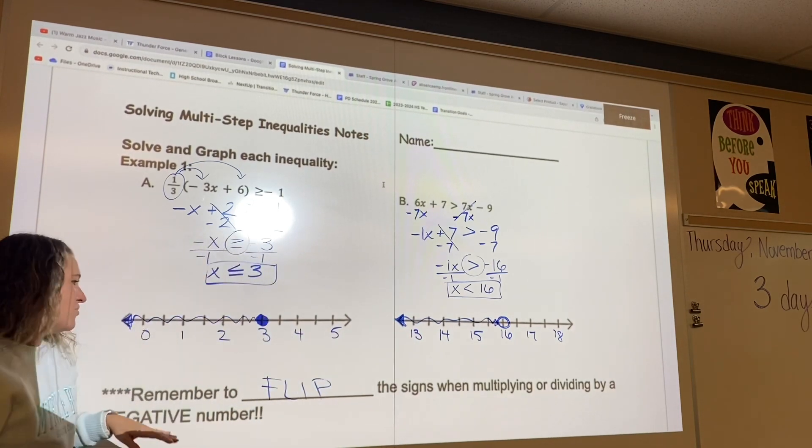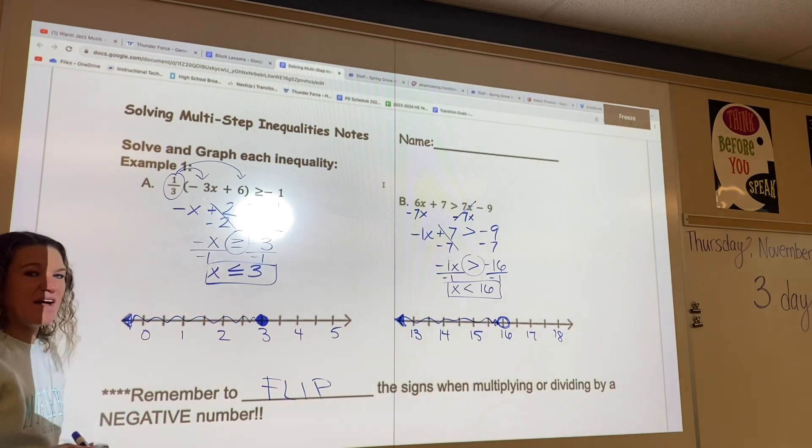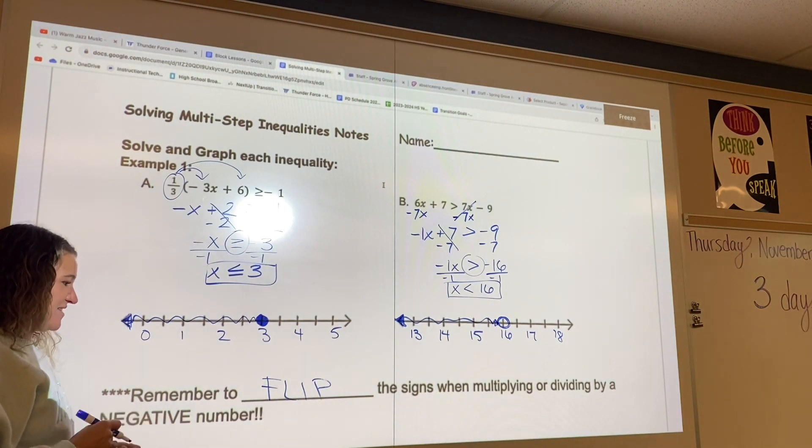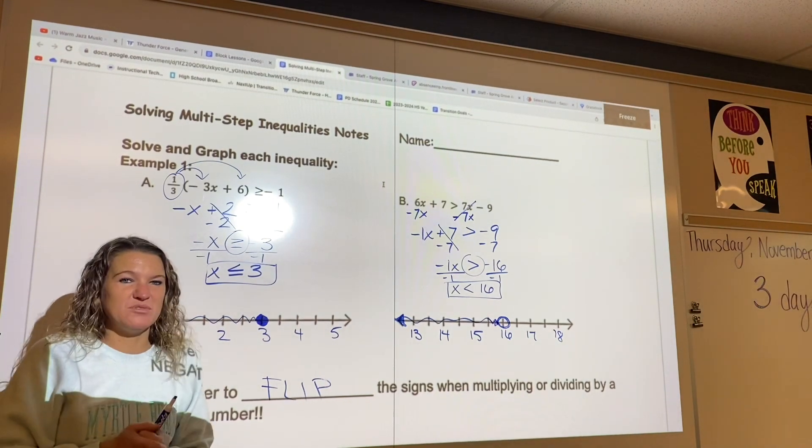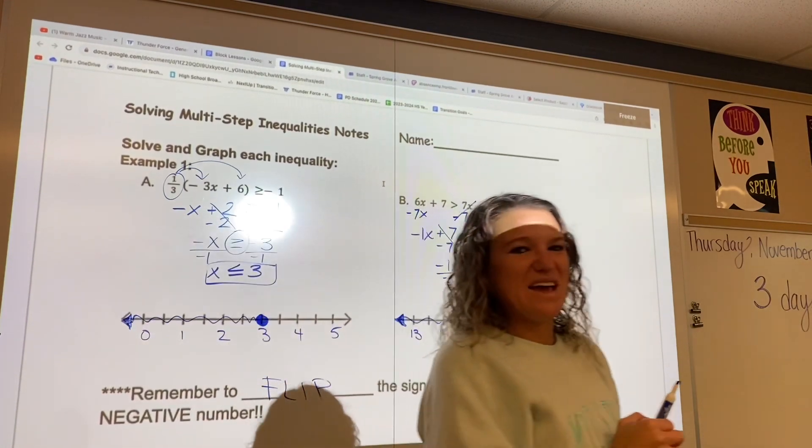So don't forget, whenever you're multiplying or dividing by a negative number, flip your sign. All right, the next four examples are for you. Go ahead and try those now. We'll see how you did.